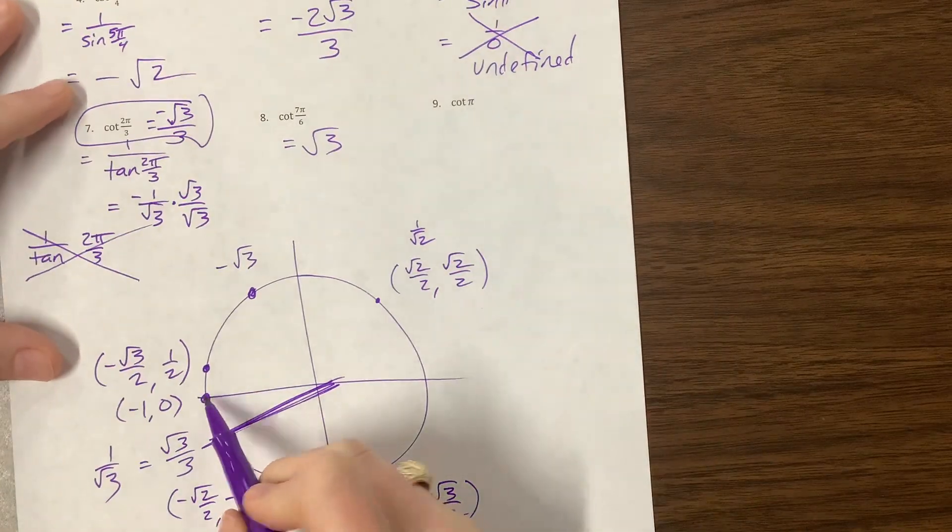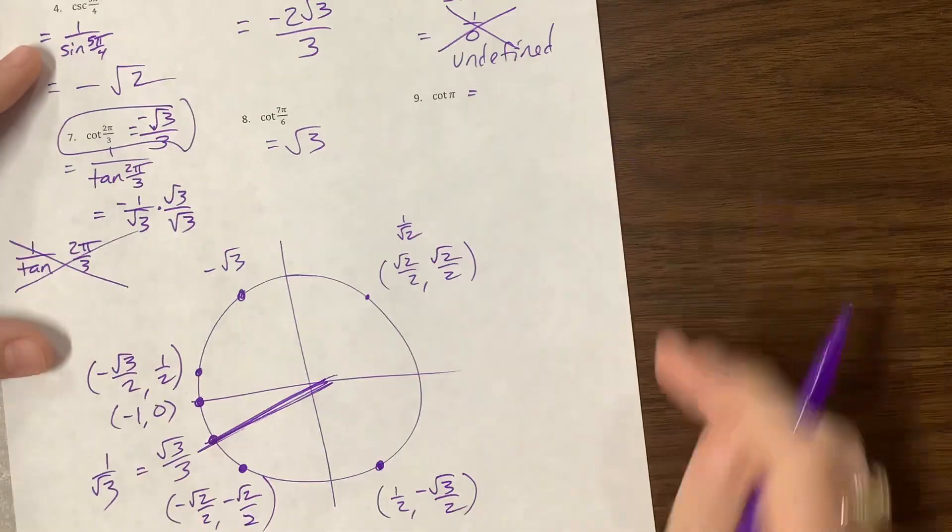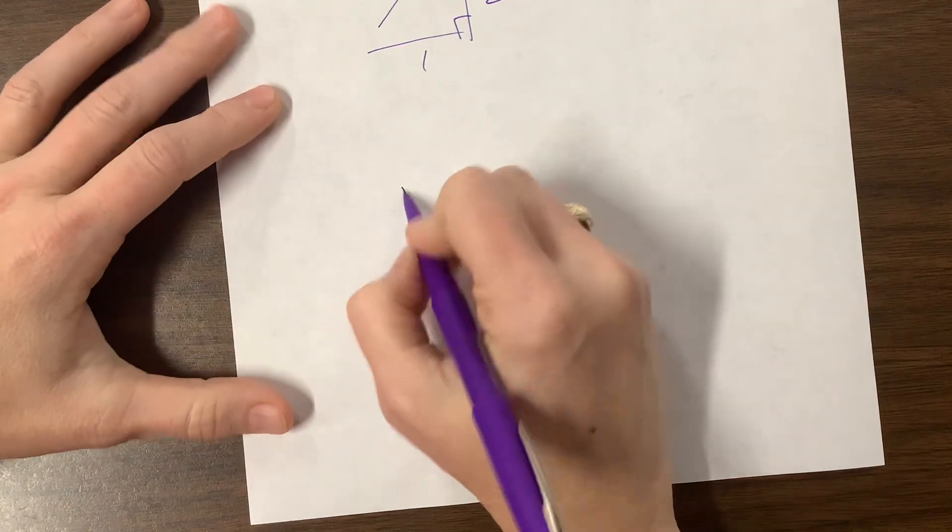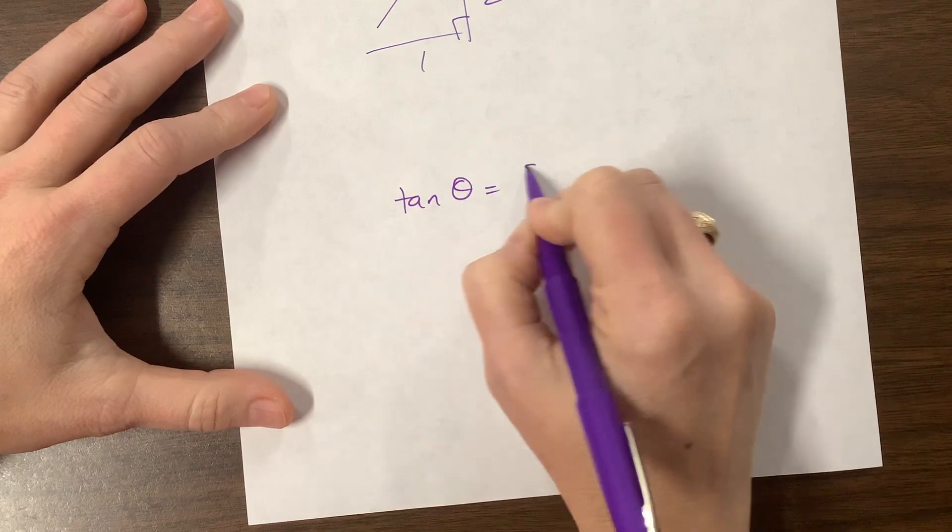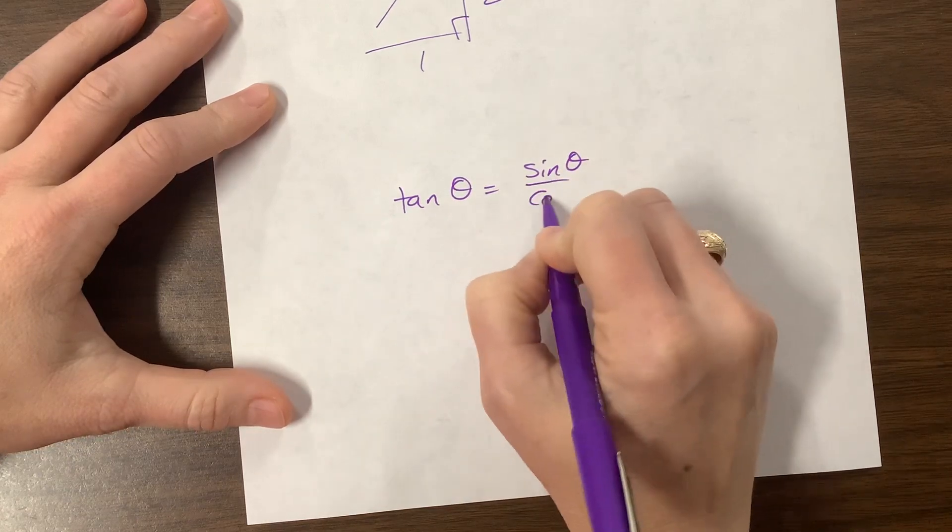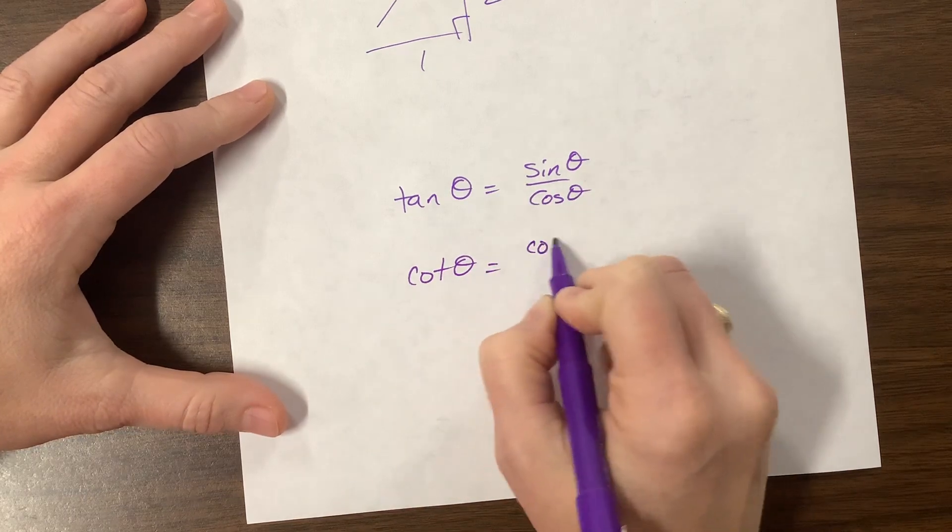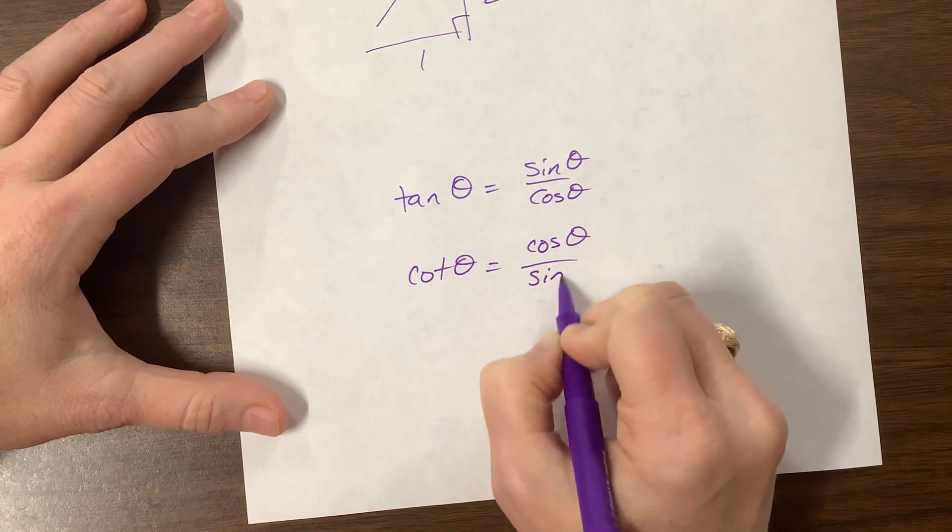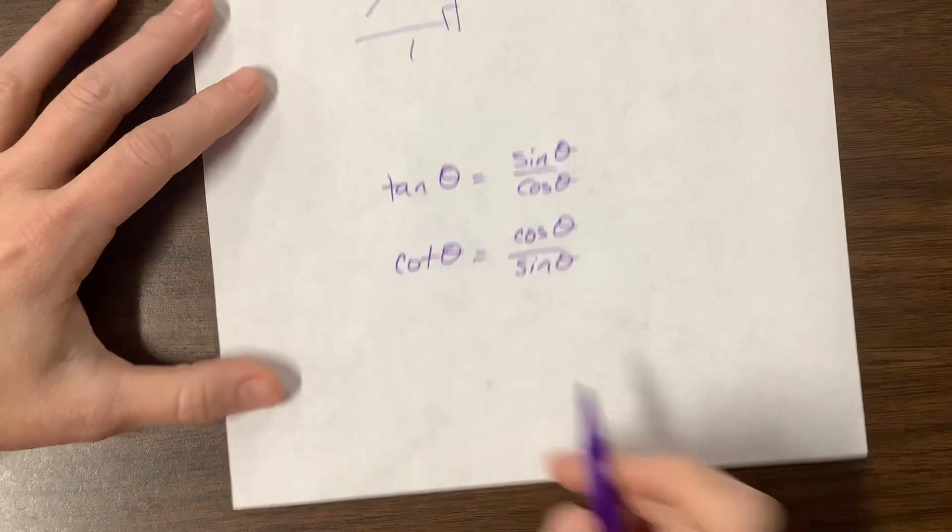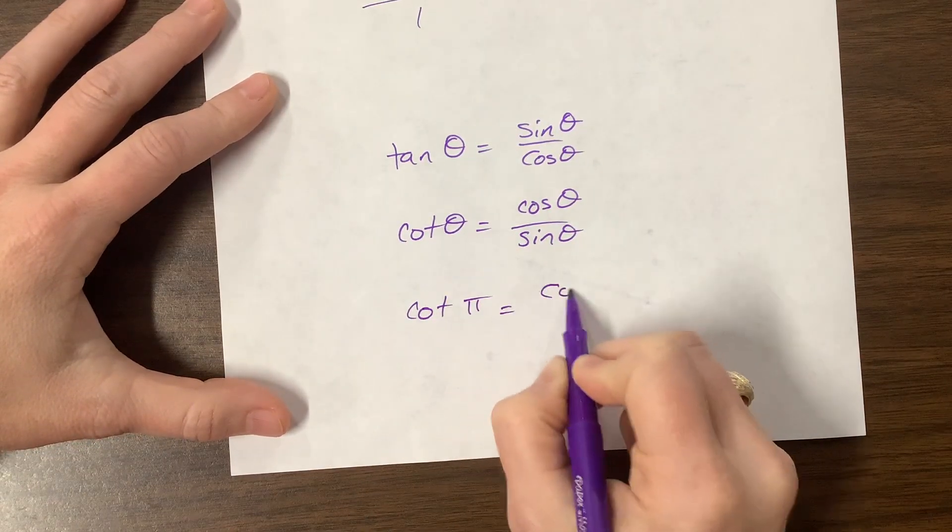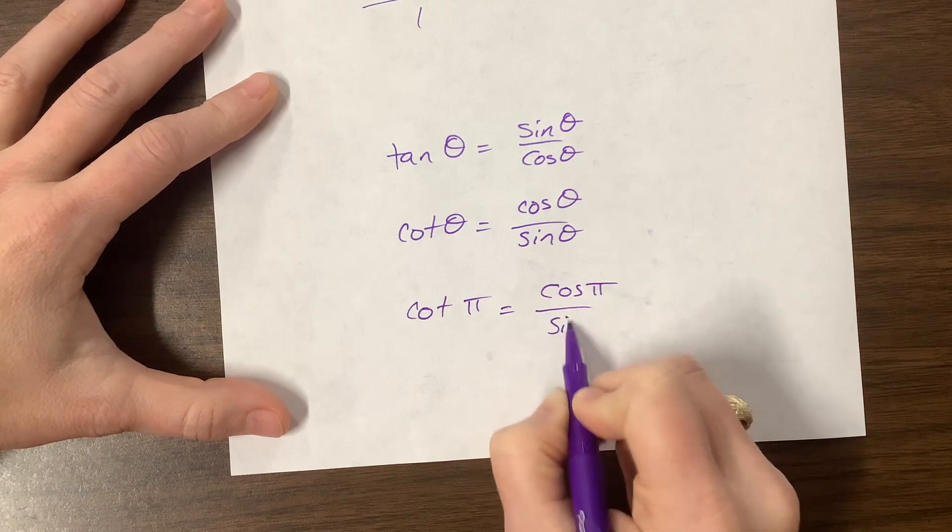Cotangent is equal to, well, here's how I would think through this one, to be honest with you. I would say, well, I would say tangent of theta is equal to sine of theta over cosine theta, which means that cotangent is going to be that reciprocal. So cotangent is cosine over sine. So I would come back, and what did we have? We had cotangent of pi.